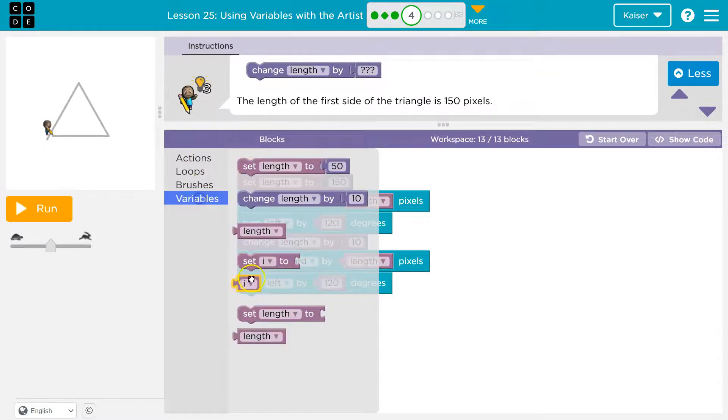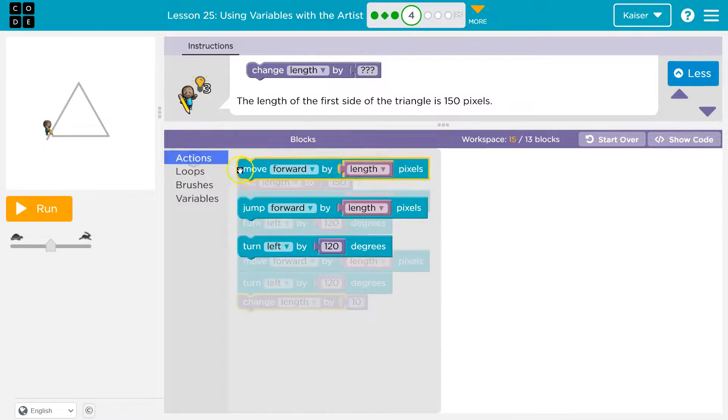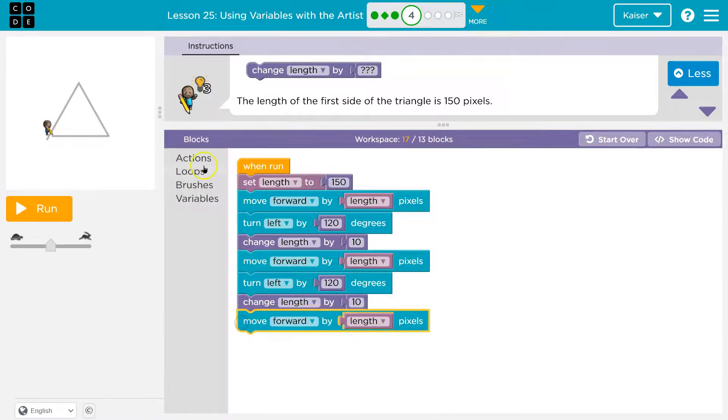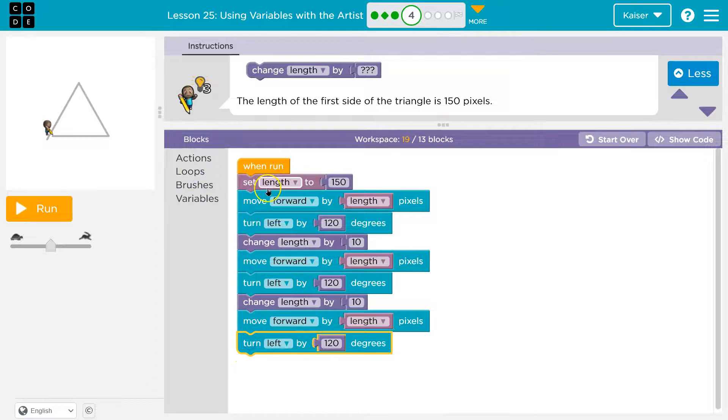So now I'm going to do variable change length by 10. Action. Move forward again. And turn.